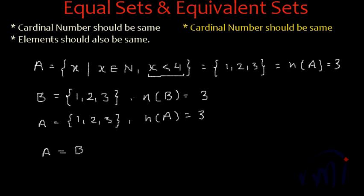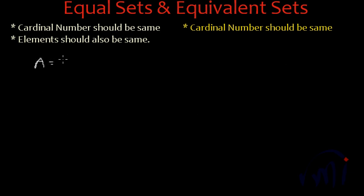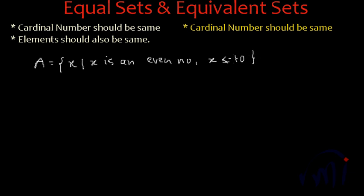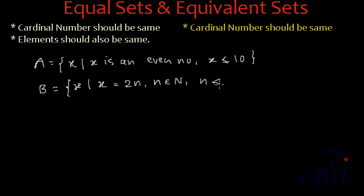If both sets have the same number of elements and all their elements are also the same, then those two sets are called identical sets. Let's take one more example. Consider set A which contains element X where X is less than or equal to 10, and set B which contains element X where X equals 2 times N, with N belonging to the set of natural numbers and N less than or equal to 5. Their definitions are very different — let's list all the elements.